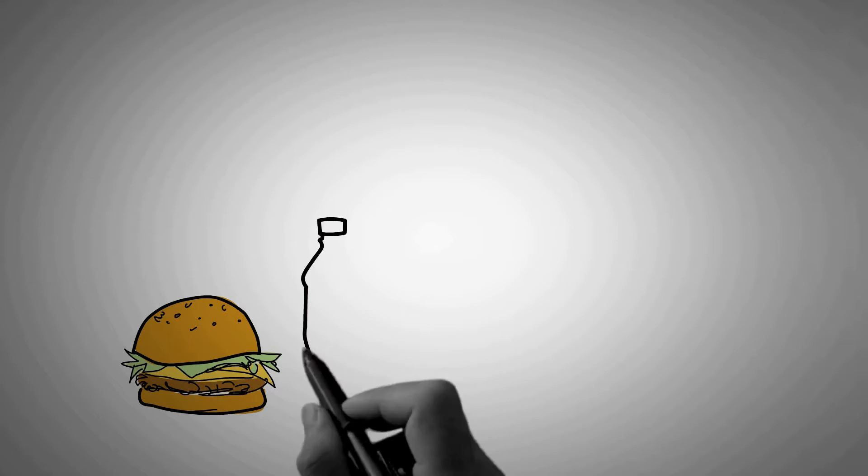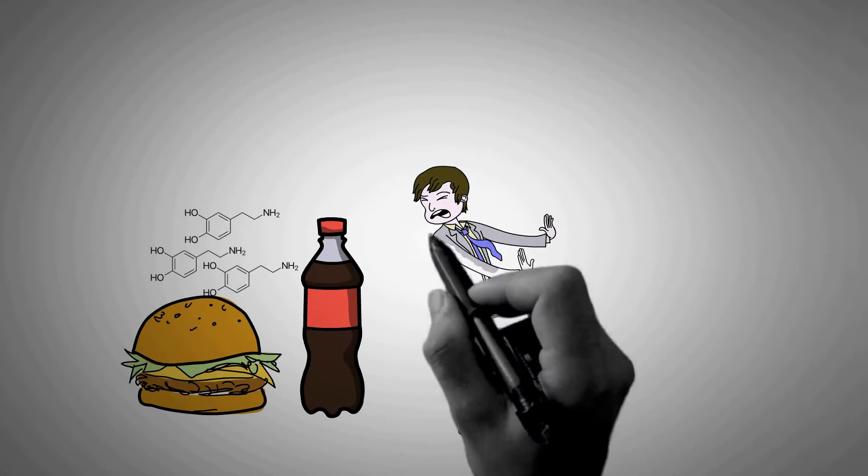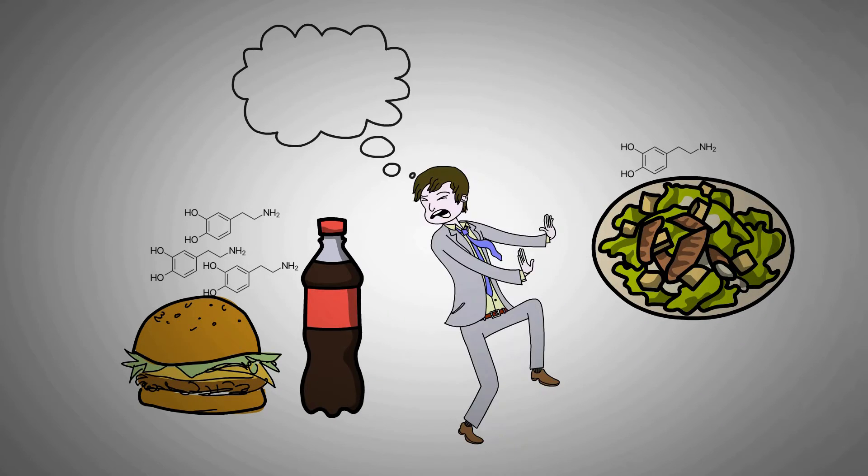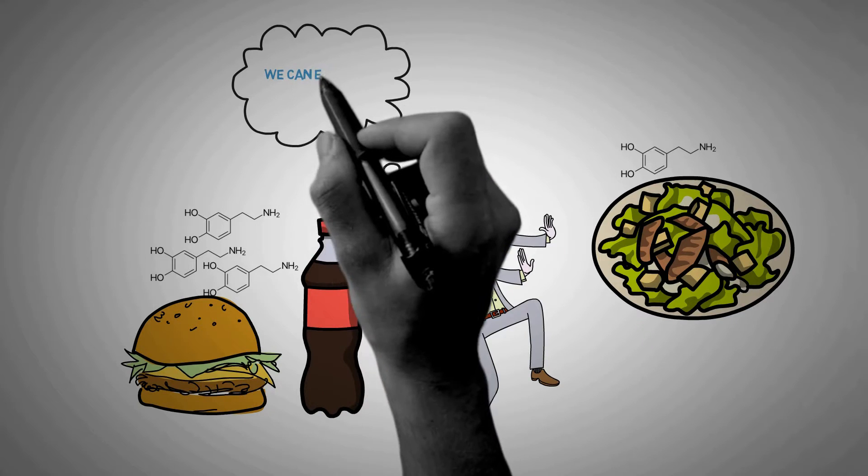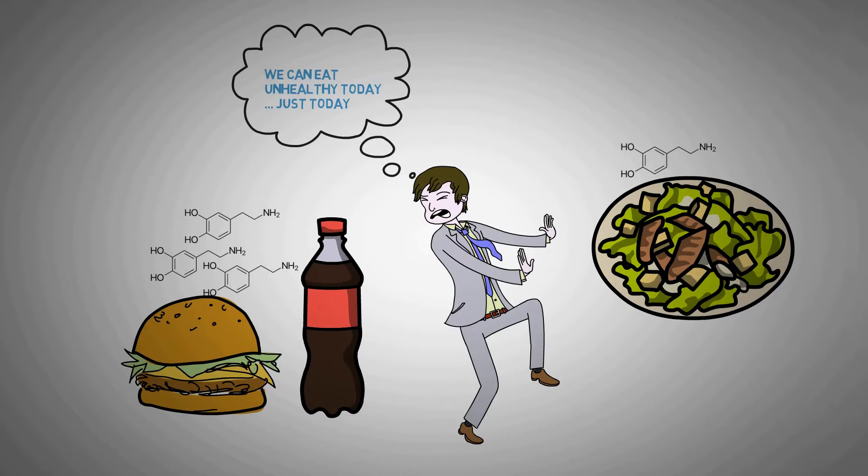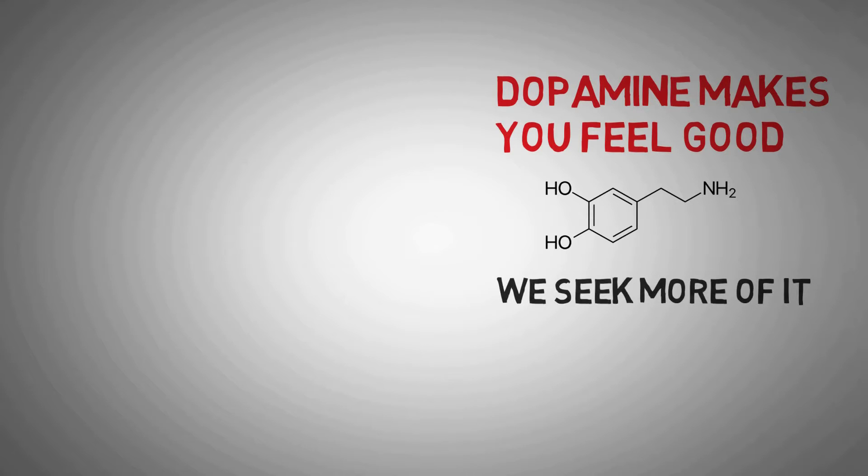That is why addiction is a thing. The problem with junk food is that it causes a reward that's way more powerful than anything you can get from whole foods. So the brain will trick you into thinking that it's okay to actually eat junk food and it will make up excuses why it's okay to eat it. Dopamine rewards you by making you feel good, so because of this we seek more of it. That's why cocaine and sugar are so addictive.